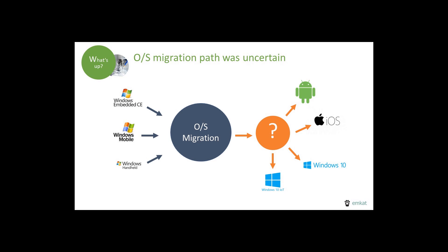By then, Microsoft had effectively left the marketplace entirely. Windows Phone made up only 0.15% of the install base on mobile devices worldwide in 2017, and Windows Mobile was below 0.00%. Microsoft did have both Windows Phone and Windows 10 IoT, but neither platform had a migration path from the older Windows embedded operating systems — they would require developers to completely rewrite applications.